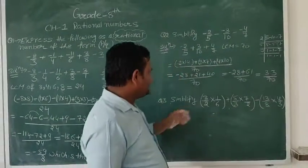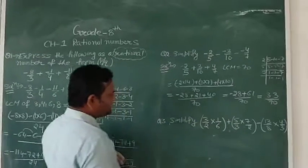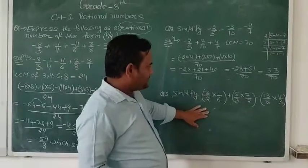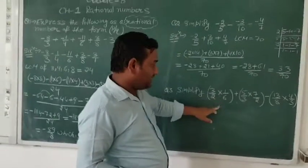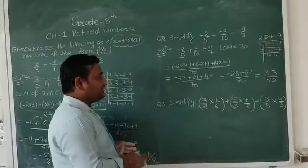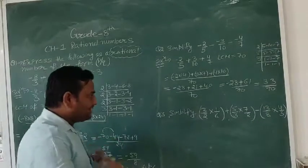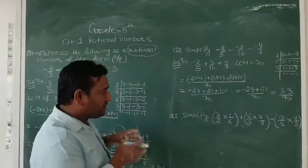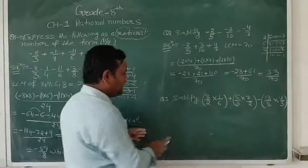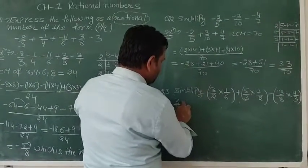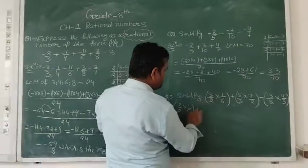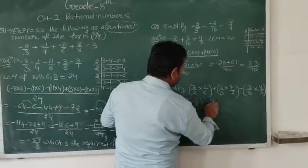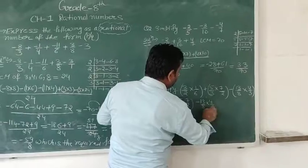Our last question is also from simplification. In this question, a new sign is introduced — the multiplication sign. So if there is a chance to multiply or reduce terms by multiplication, we go for that first. The expression is: 3 upon 2 times 1 upon 6, plus 5 upon 3 times 7 upon 2, minus 18 upon 8 times 4 upon 3.